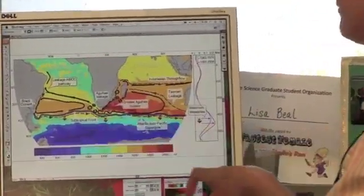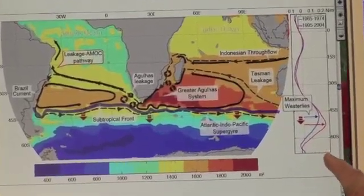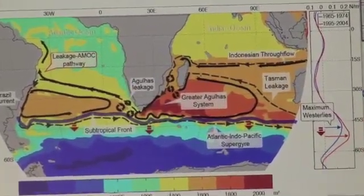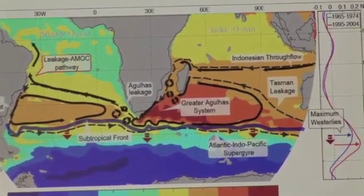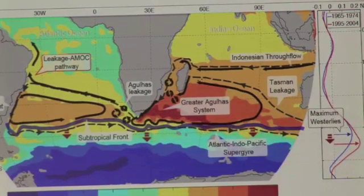The Agulhas forms an important part of what we call the global thermohaline circulation, which is kind of the simplest way to describe how the ocean and its currents link globally.